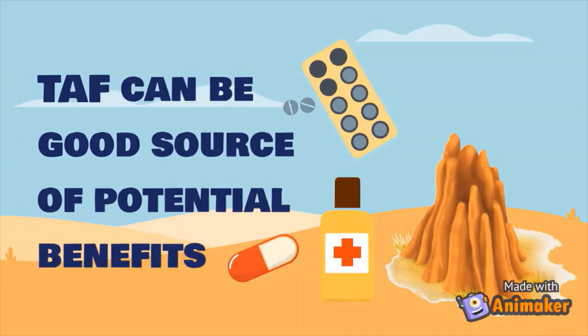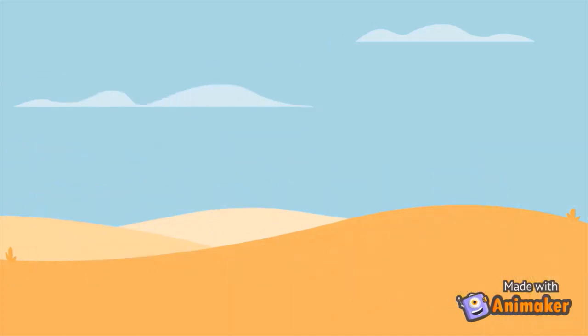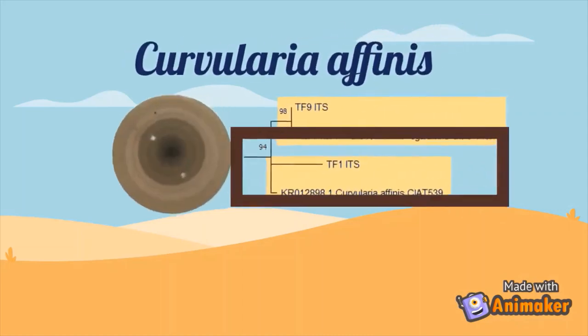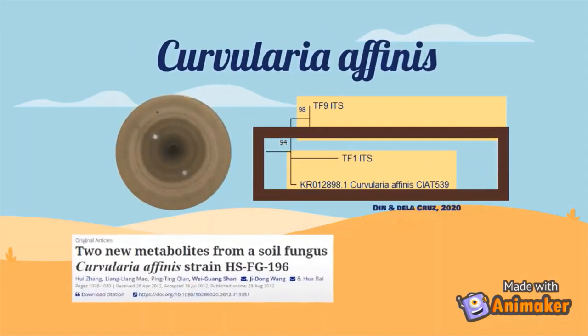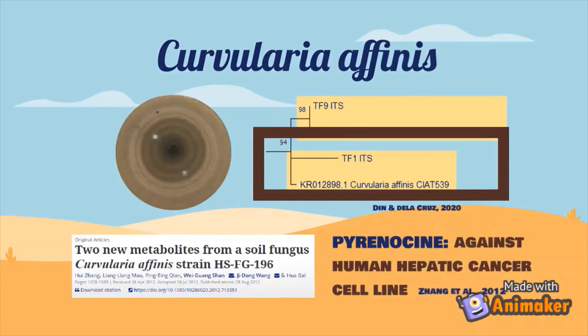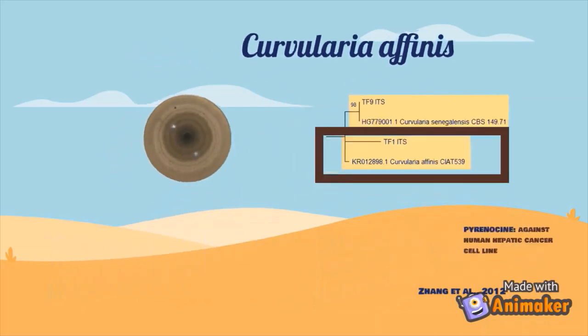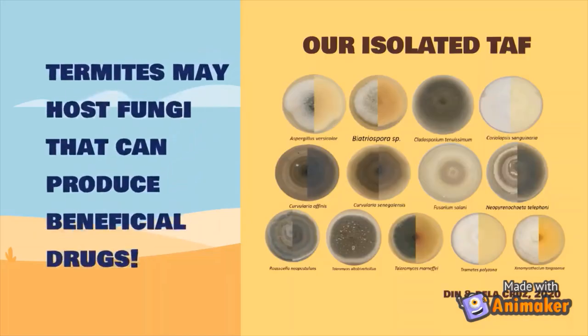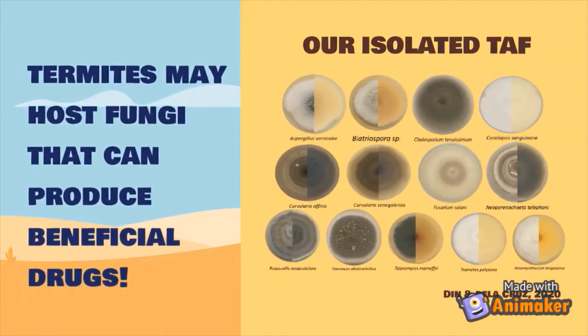Surprisingly, these unique TAF can be a good source of potential drugs. In fact, one of the 13 unique TAF was a Curvularia fungus. In a study by Yang et al. in 2012, this fungus was observed to possess two new metabolites, one of which is pyrenorphine. This metabolite showed cytotoxic activity against human hepatic cancer cell lines. This suggests that termites in our study may host fungi that produce beneficial drugs.